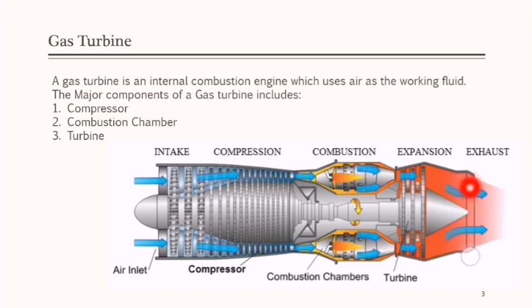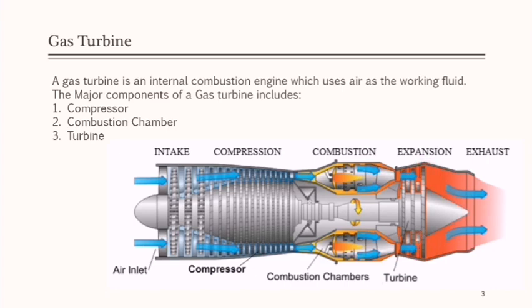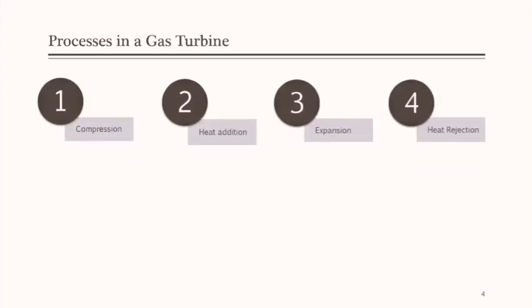There are two types of gas turbine cycles. The majority of gas turbines are open cycle, where air is used as the working fluid and then exhausted. In a closed cycle gas turbine, the exhaust gas goes through a heat rejection process using a heat exchanger, and the working fluid is re-circulated. The four processes in the cycle are: compression, heat addition, expansion, and heat rejection.